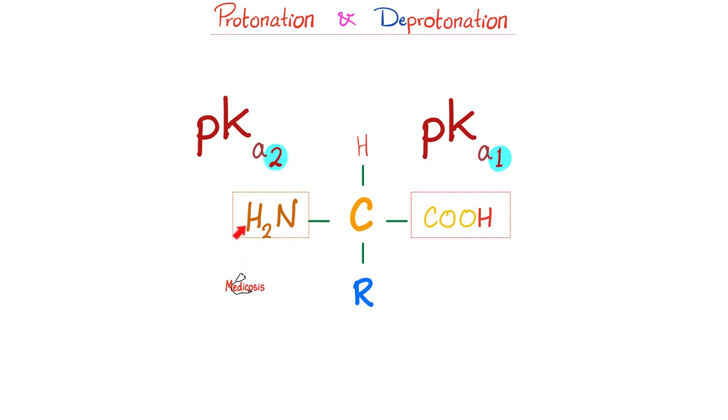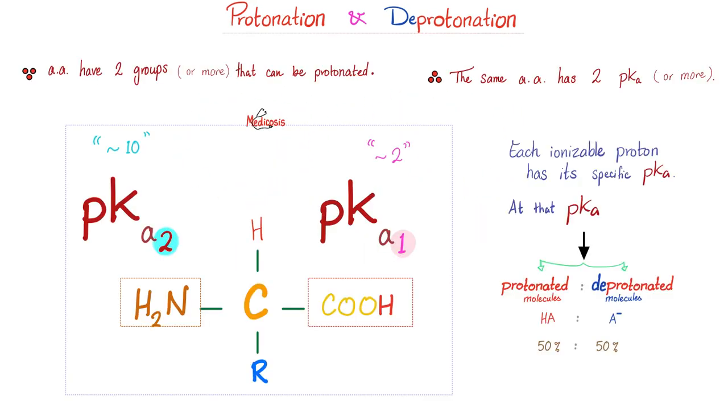An amino acid has an amino group and a carboxyl group. Each one has a separate pKa. Since an amino acid has two groups that can be protonated, the same amino acid will have two pKa's. What if the amino acid has three groups? Then it will have three pKa's. The carboxyl group has a pKa1 of about 2, and the amino group has a pKa of about 10. They are not the same.